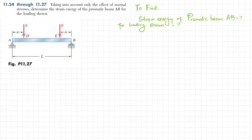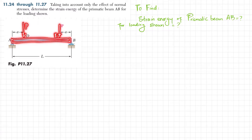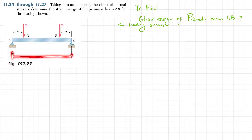Welcome back. Problem 11.27: taking into account only the effect of normal stress, determine the strain energy of prismatic beam AB for the loading shown. This is beam AB with two point loads acting at points D and E, each of magnitude P. The total length of the beam is L.